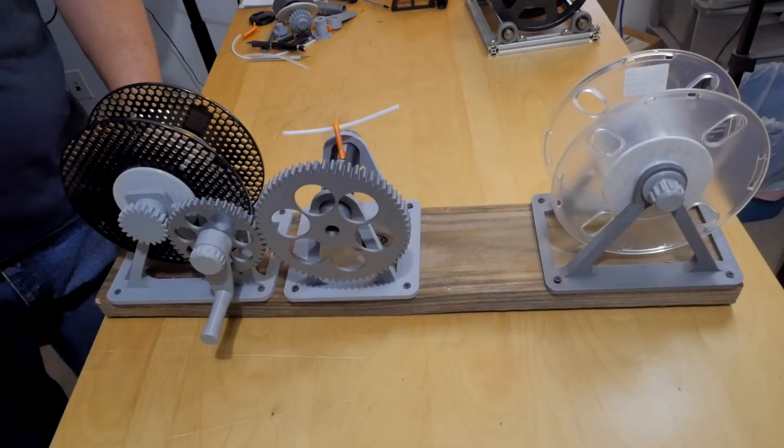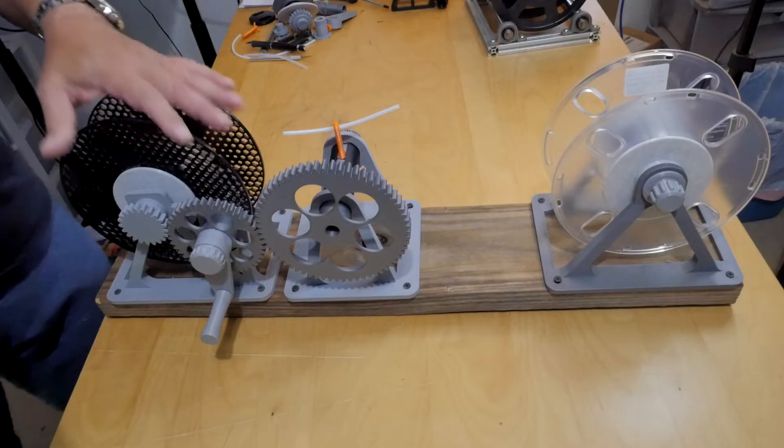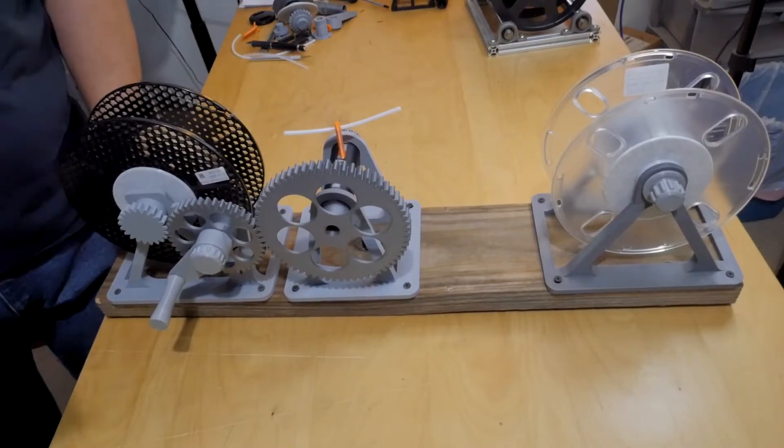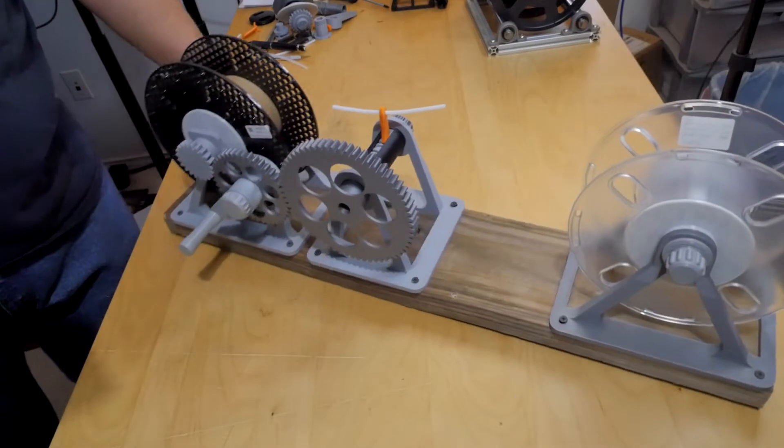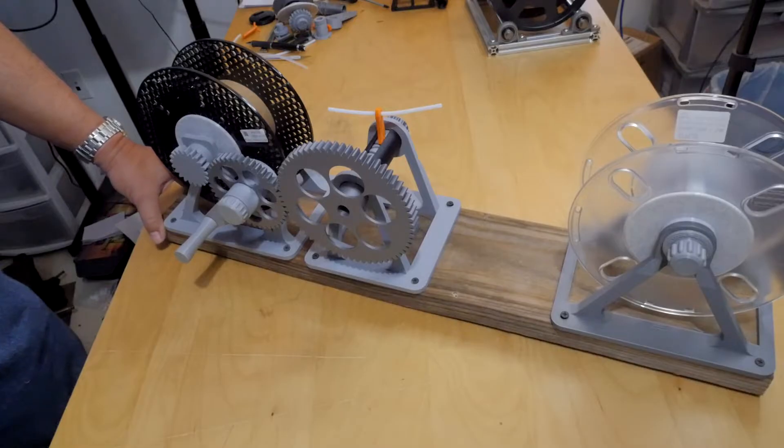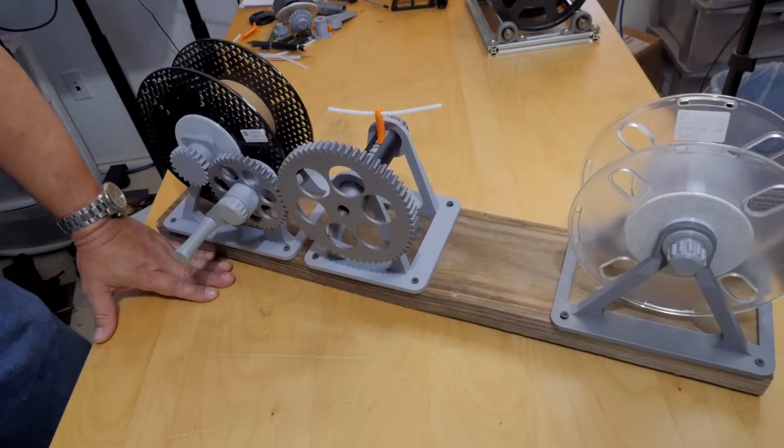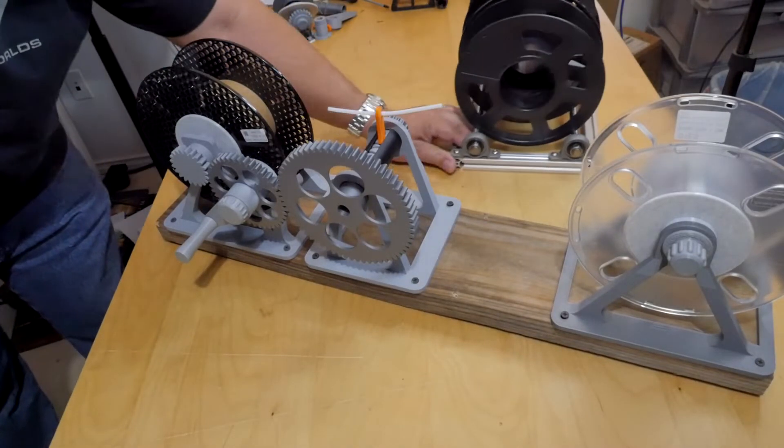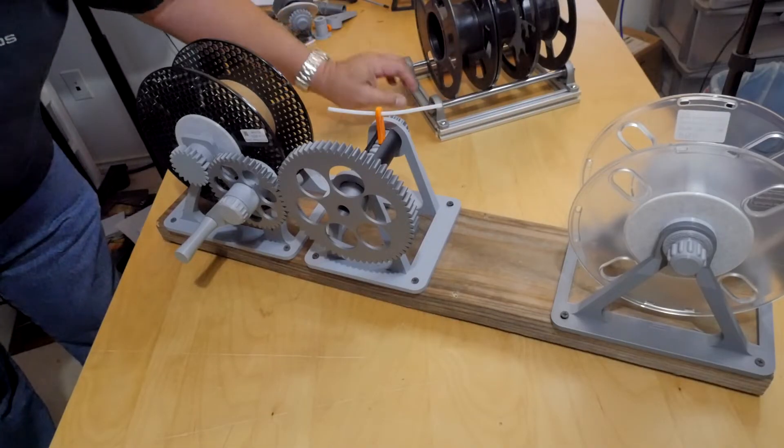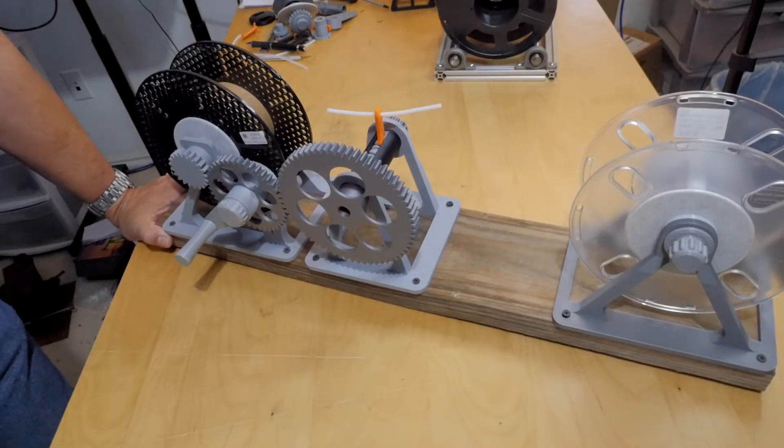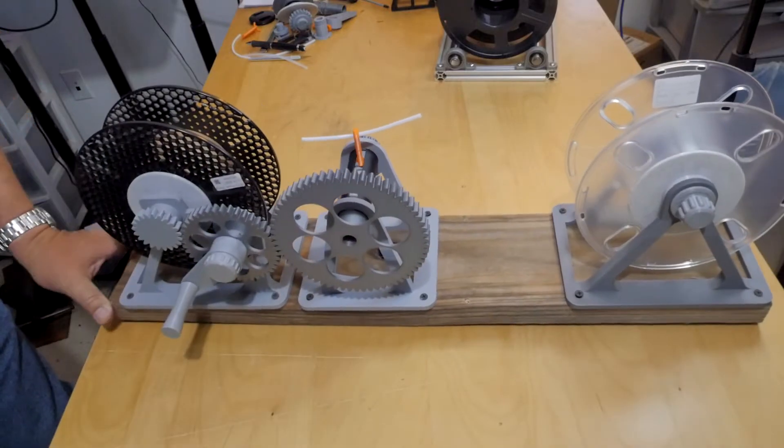So this is what I came up with. Everything is 3D printed except for the hardware I used to tack this down on a 2x6 just temporarily while I'm testing everything. For the base you can use aluminum extrusions or tack it directly down to a tabletop if you want.